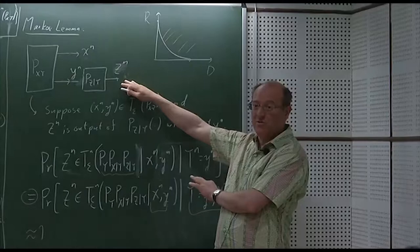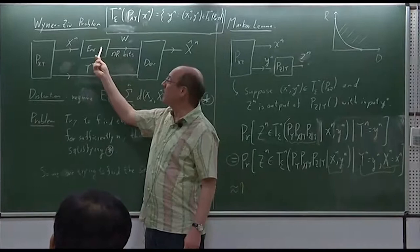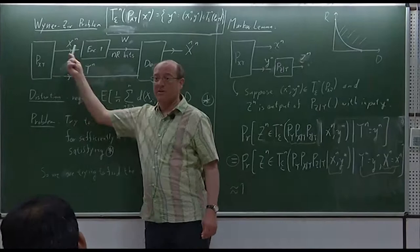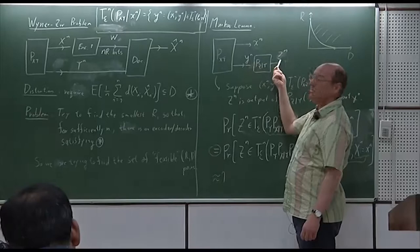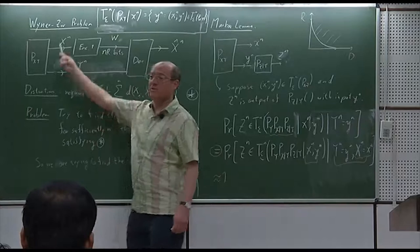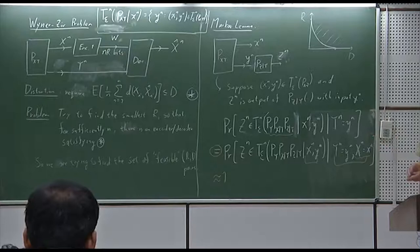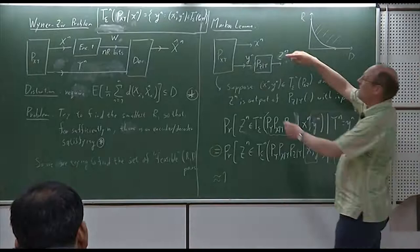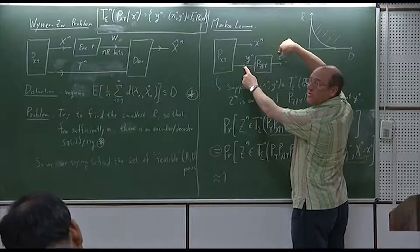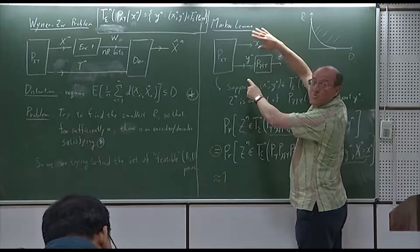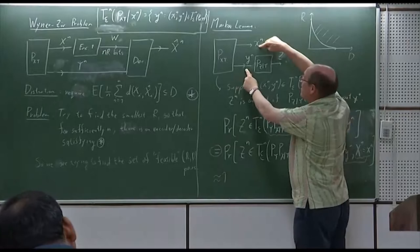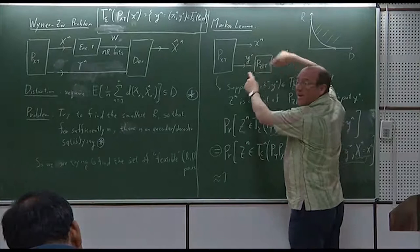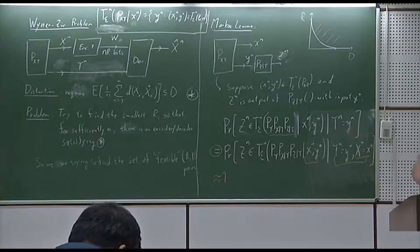We'll need the Markov Lemma here in a moment for this problem. What's going to happen is we'll generate a code book, and then we'll have the Markov chain from y to x to some new random variable. This will be like the y, this will be like the x, and this will be the new auxiliary variable. The important thing: it effectively says, if we have a Markov chain, if these two are jointly typical and these two are jointly typical, then the triple is jointly typical. That's not true in general for other distributions, but for a Markov chain it does hold. That's the important insight. That's called the Markov Lemma.